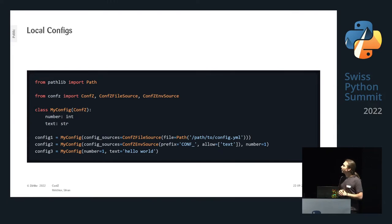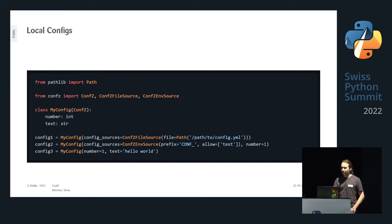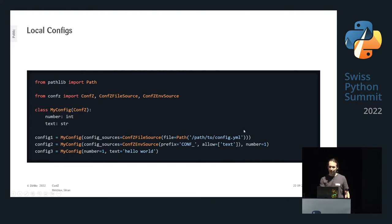The global config singleton isn't always what you want, especially as the application grows. Instead of using the config_sources class variable, you can define standard configs that inherit from conf-set, and provide config_sources at instantiation time. This has the same power as the class variable approach but is now an instantiation argument. You can also combine this with traditional keyword arguments — you can use it as if it were just a data class or a pydantic base model.